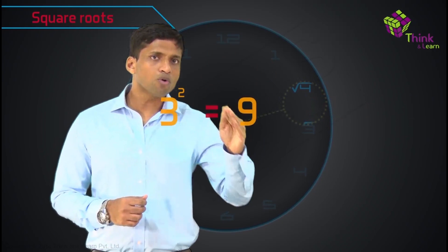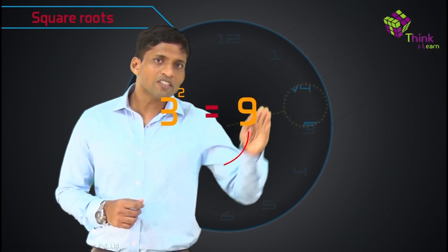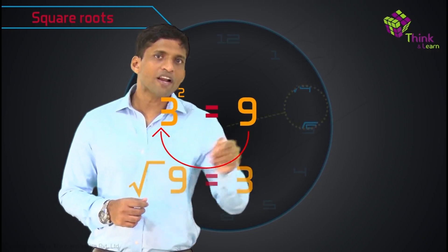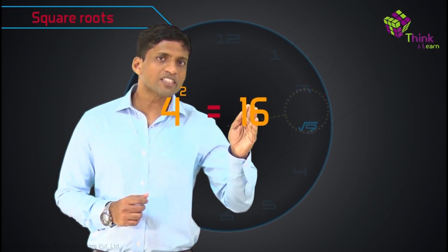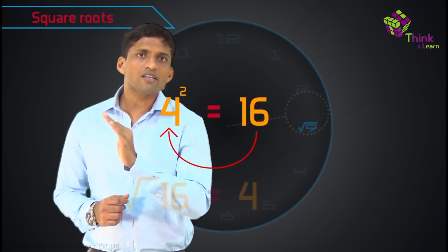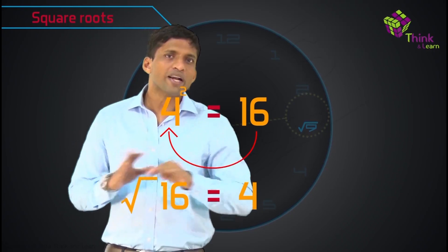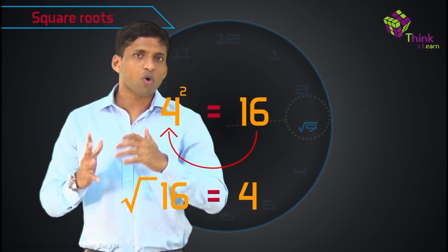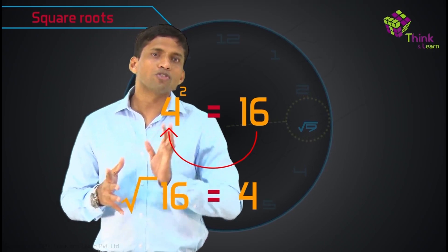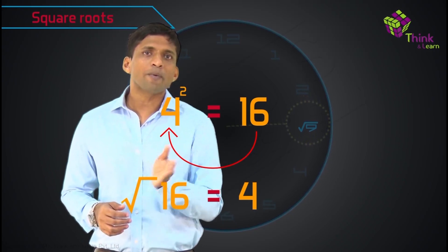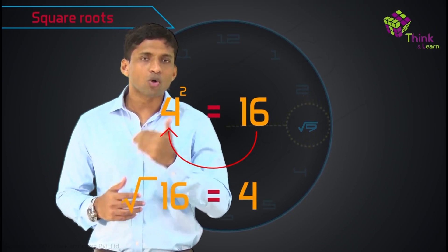If I write 3 square equal to 9, square root of 9, which I am reading from right to left, square root of 9 is 3. 4 square equal to 16, square root of 16 is 4. So it's very simple, right? There is nothing complicated here. If you know squares, trust me, you know square roots also. But just that it's the inverse operation compared to squares.